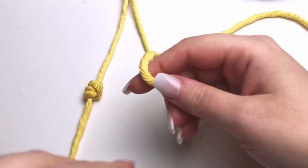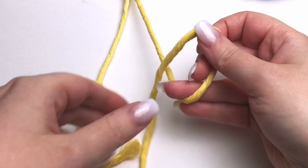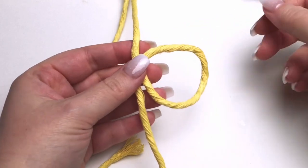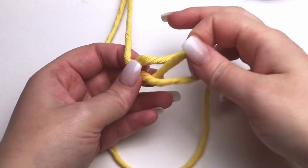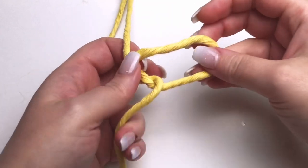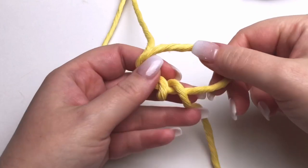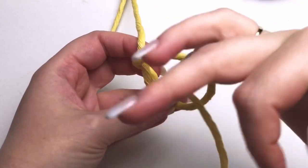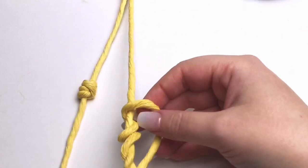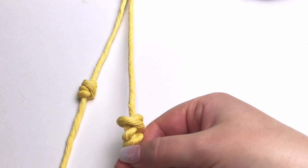You fold it around into a loop and then you take the long tail end and you wrap it through the inside of your loop. I like to wrap it three times, but the more you wrap it, the longer your barrel knot will be.